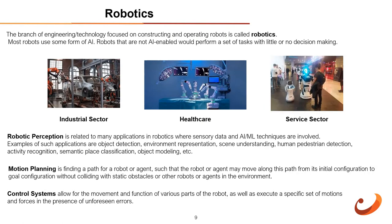Robotics: the branch of engineering focusing on constructing and operating robots is called robotics. Most robots use some form of AI. Robots that are not AI-enabled would perform a set of tasks with little or no decision-making. In robotics, perception is understood as a system that grants the robot the ability to perceive, comprehend, and reason about the surrounding environment. Other notions include motion planning and control systems.